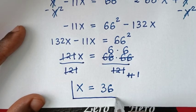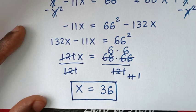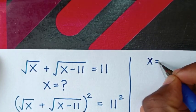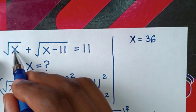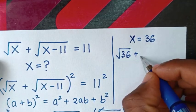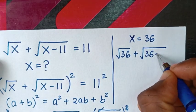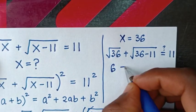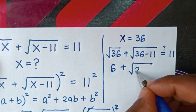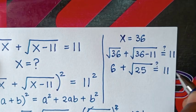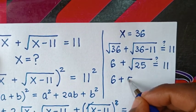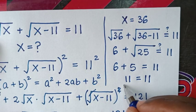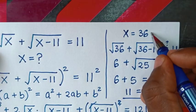Therefore, x equals 36 is our final answer. Let's verify: substitute x = 36 back into the original equation. We get √36 plus √(36 − 11), which is √36 plus √25. That is 6 plus 5, which equals 11. The left side equals the right side, so x = 36 is confirmed correct.